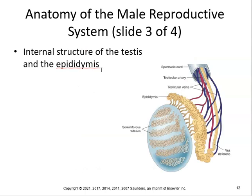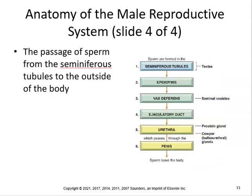Looking at the internal structures of the testes and epididymis: the seminiferous tubules produce sperm, then sperm hang out in the epididymis for 7 to 21 days. The passage of sperm goes from the seminiferous tubules, to the epididymis, to the vas deferens, to the seminal vesicles, then into the ejaculatory duct. The prostate gland and Cowper's gland add their fluid, then it goes through the urethra and penis, and the sperm leave the body.